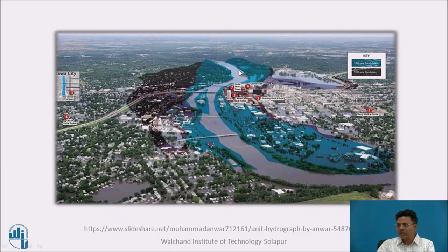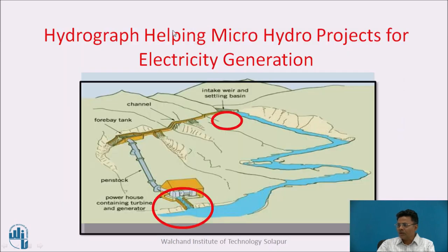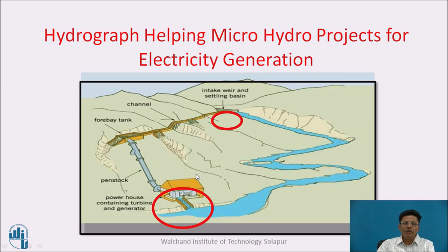Here is a picture showing the main river channel with water spread on both banks. Hydrographs also help hydropower projects for electricity generation. This shows the intake weir and the river, with water transferred to the hydropower plant, generating power using the available head. Hydrographs are useful for estimating the power potential and the availability of water for the hydropower plant.